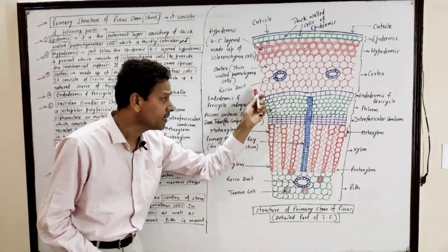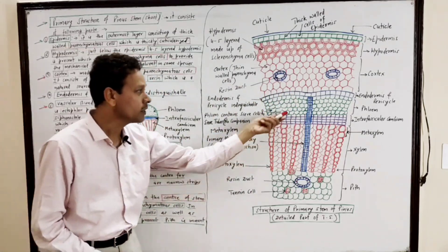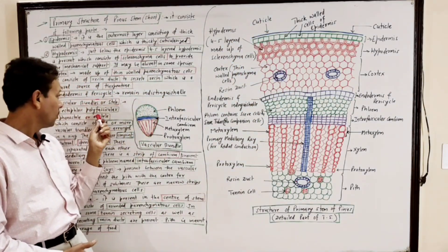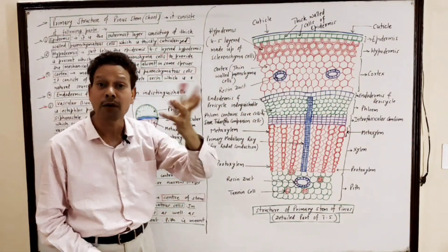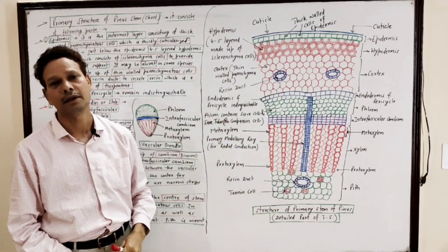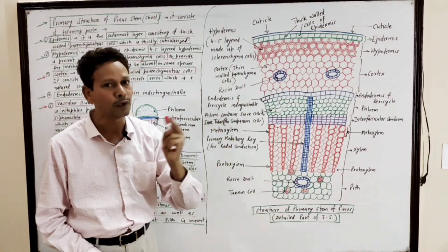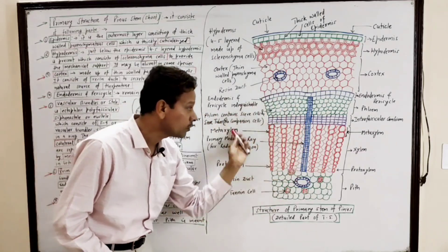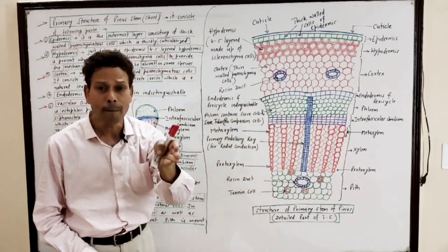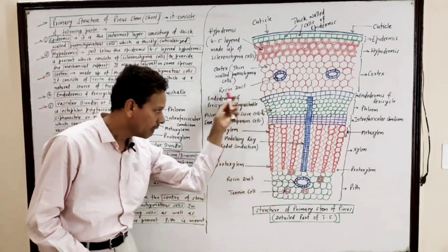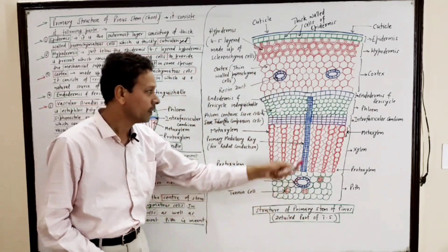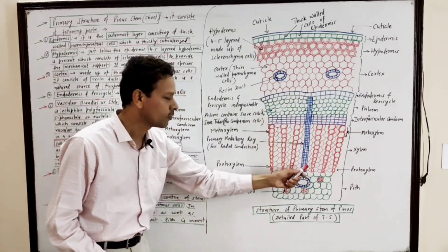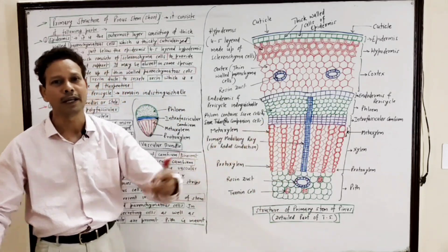Dear students, it is ectophloic because the phloem faces outwardly. It is polyvascular because several vascular bundles are there — about 5 to 9 or more than 9. And these vascular bundles are compactly arranged in a ring, separated by thin layers of primary medullary rays.